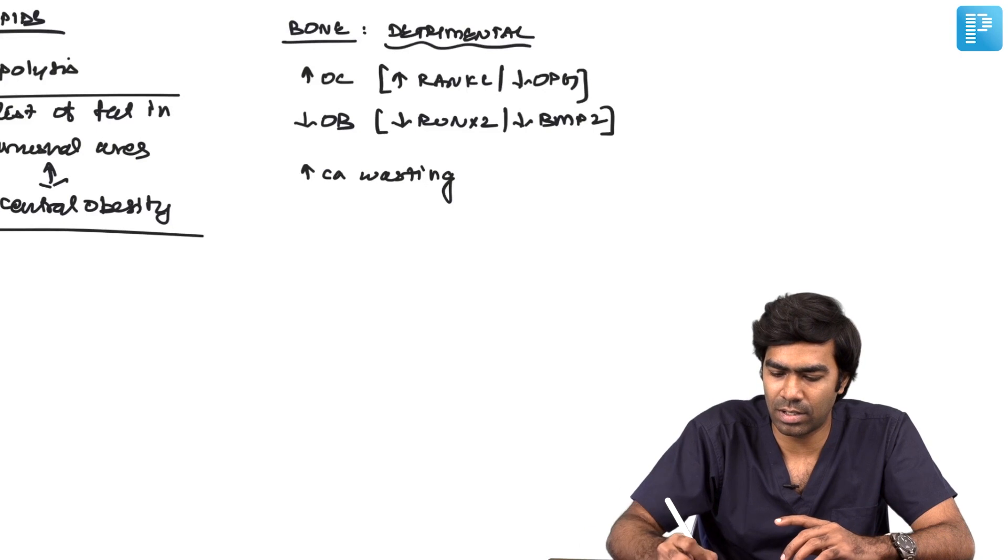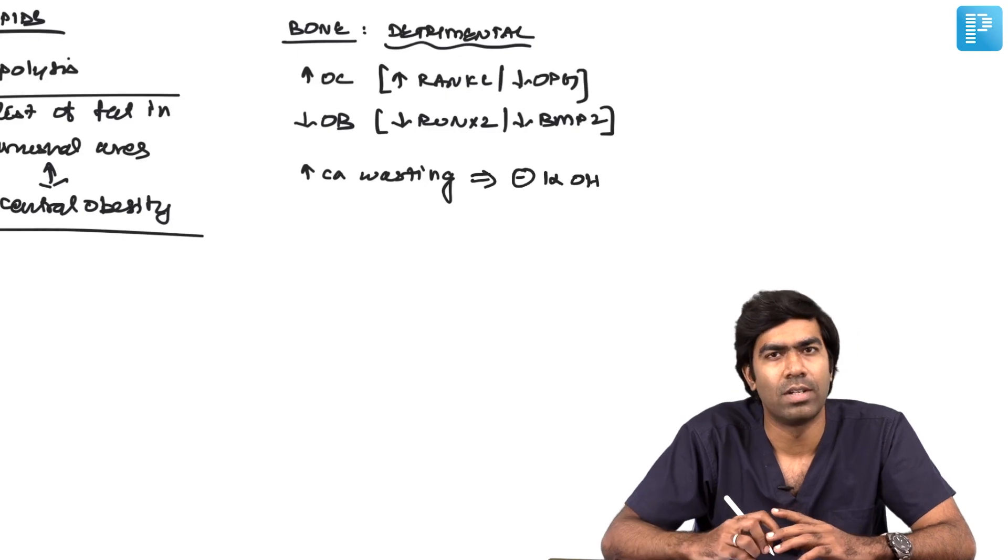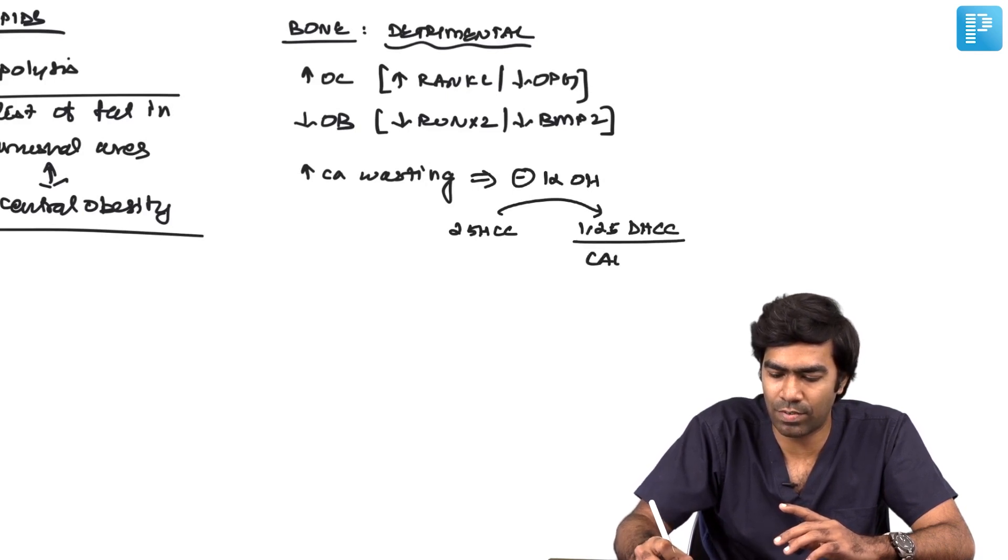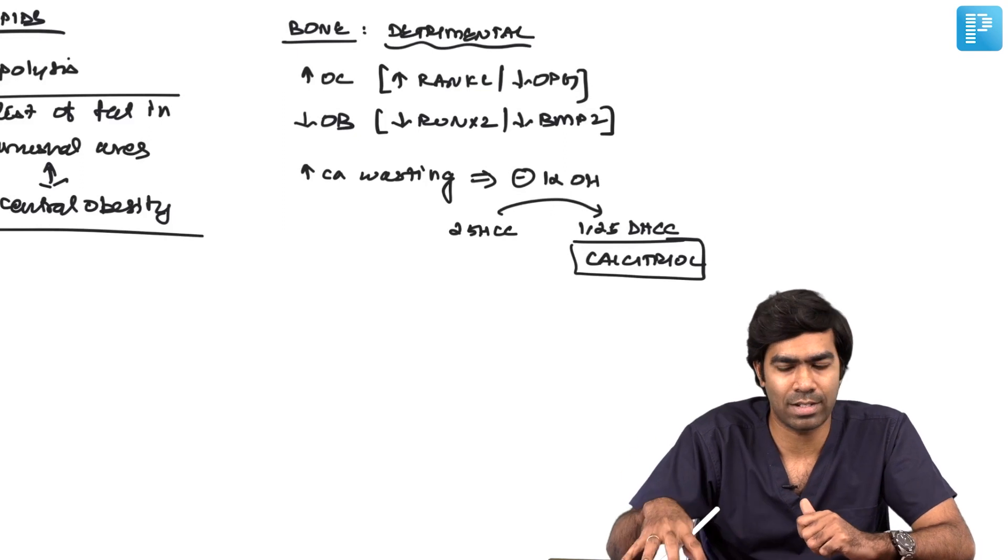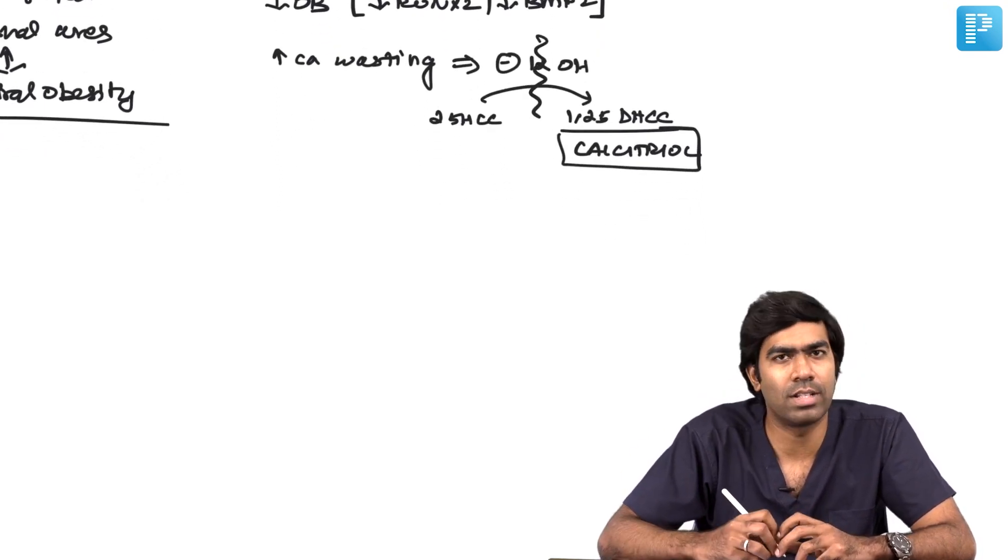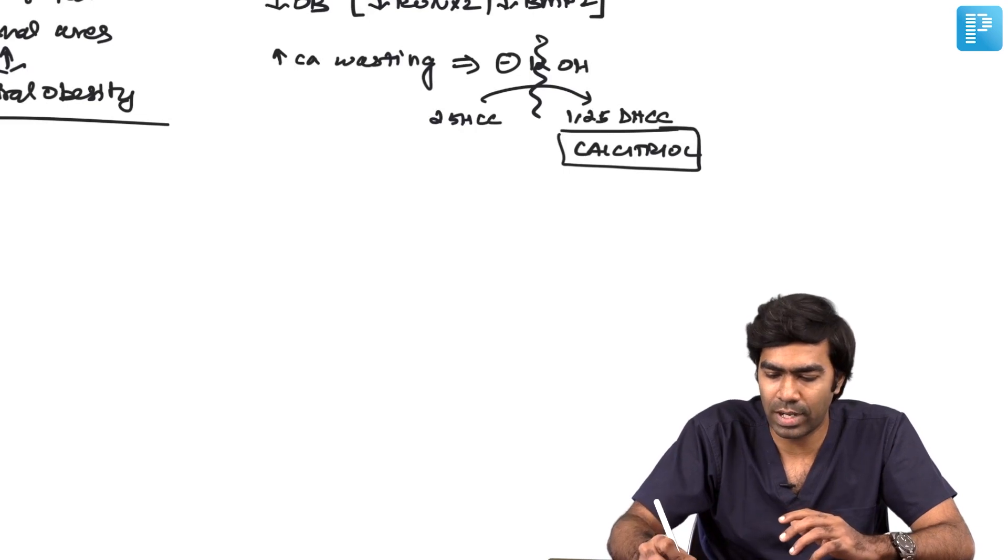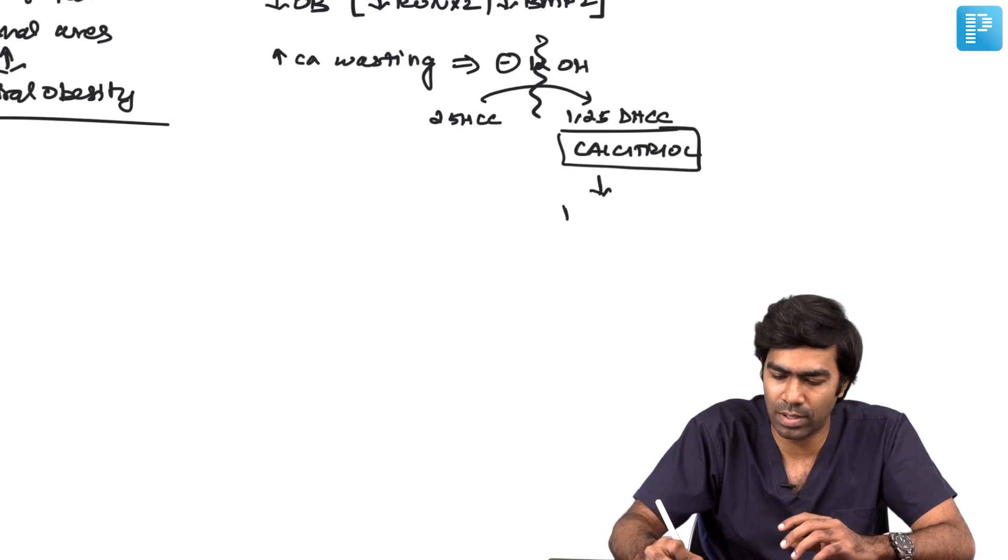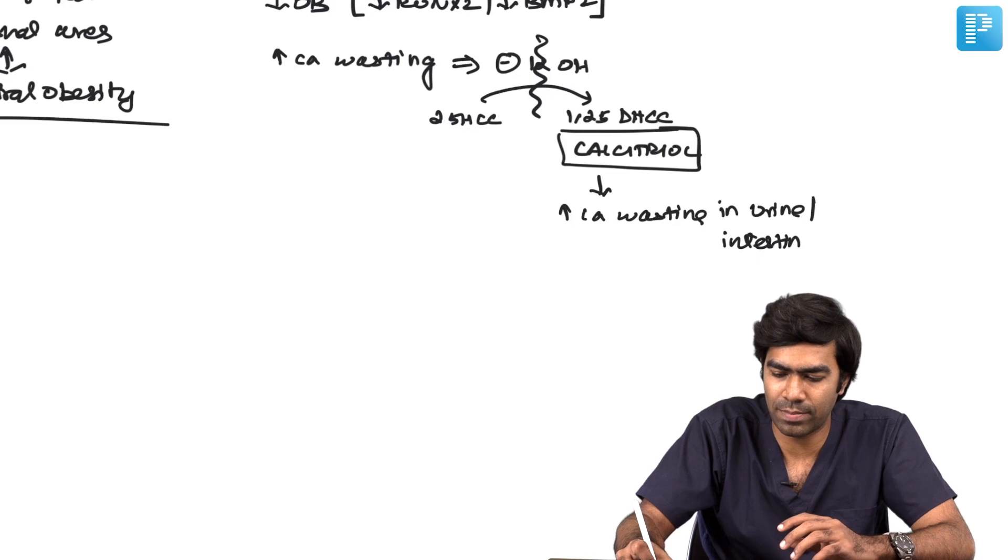Calcium wasting from the body is usually due to inhibition of the 1-alpha-hydroxylase enzyme, which converts 25-hydroxycholecalciferol to 1,25-dihydroxycholecalciferol (calcitriol or active vitamin D). This is very important for reabsorbing calcium from the intestine. Because they block this step, you get increased calcium wasting in urine and intestine.